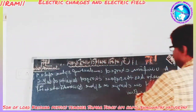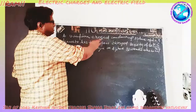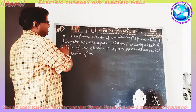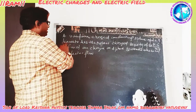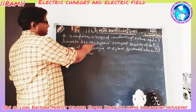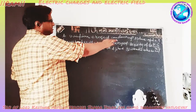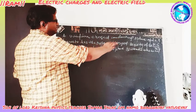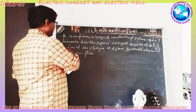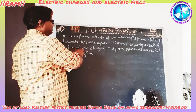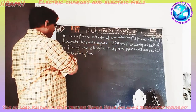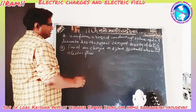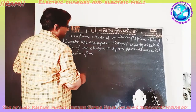A uniform charged conducting sphere of 2.4 meter diameter has a surface charge density of 80 µC per meter square. Find the charge on the sphere, and second, what is the total electric flux that will be generated?